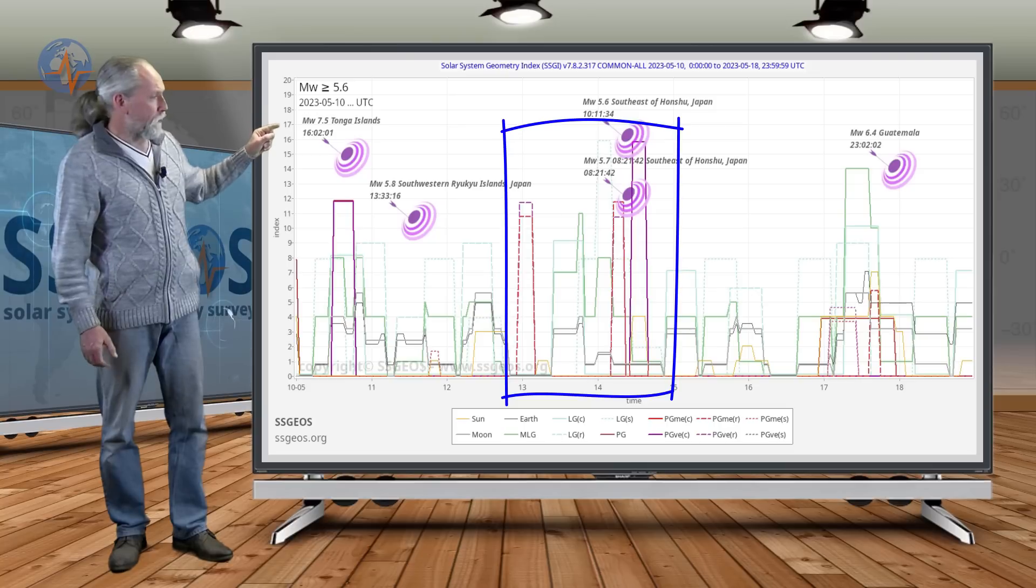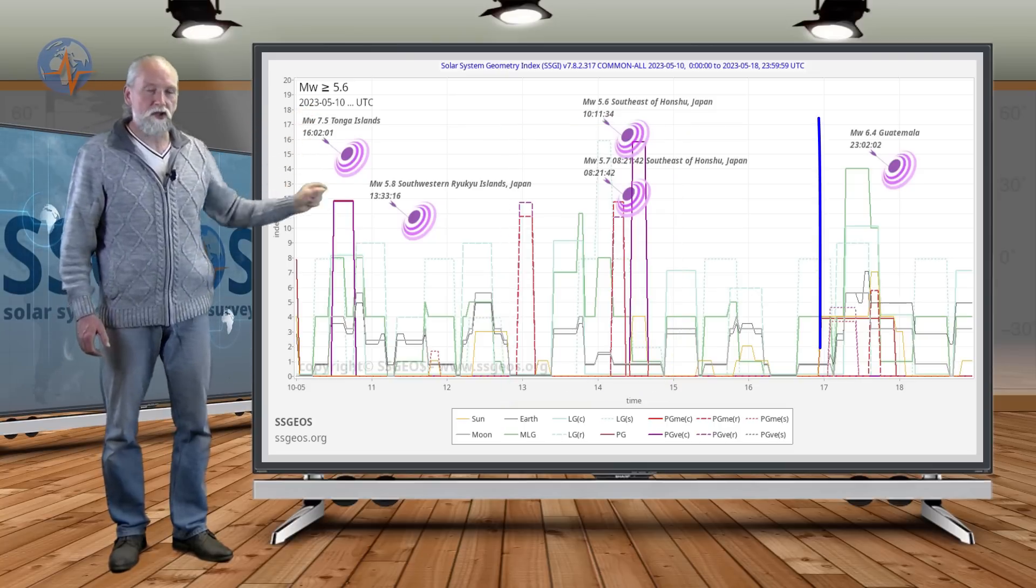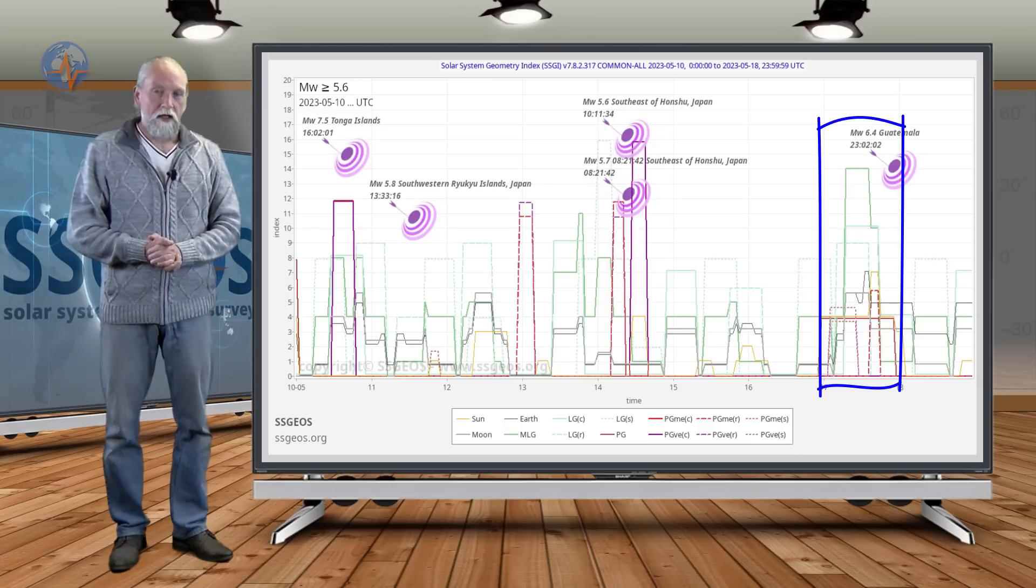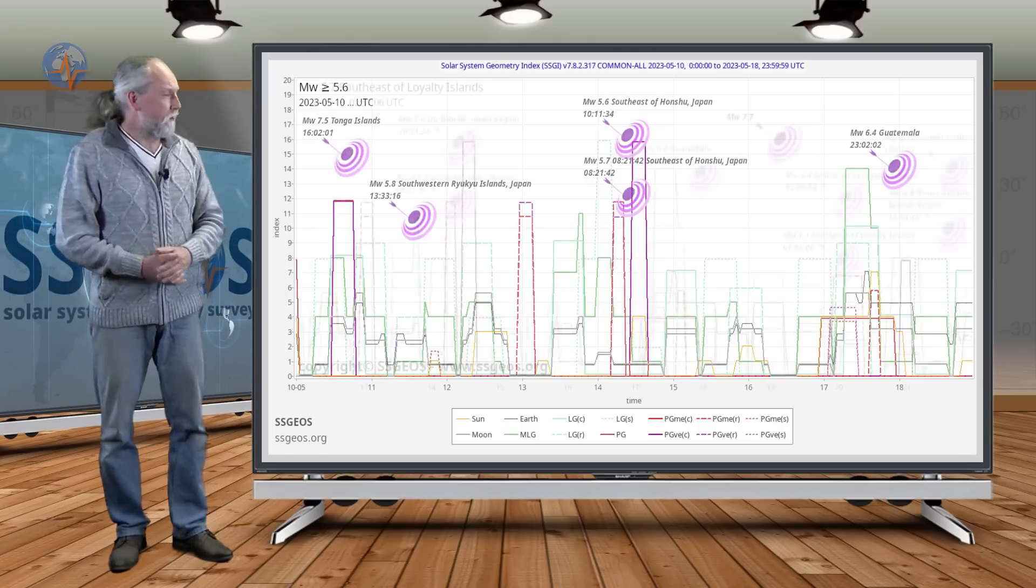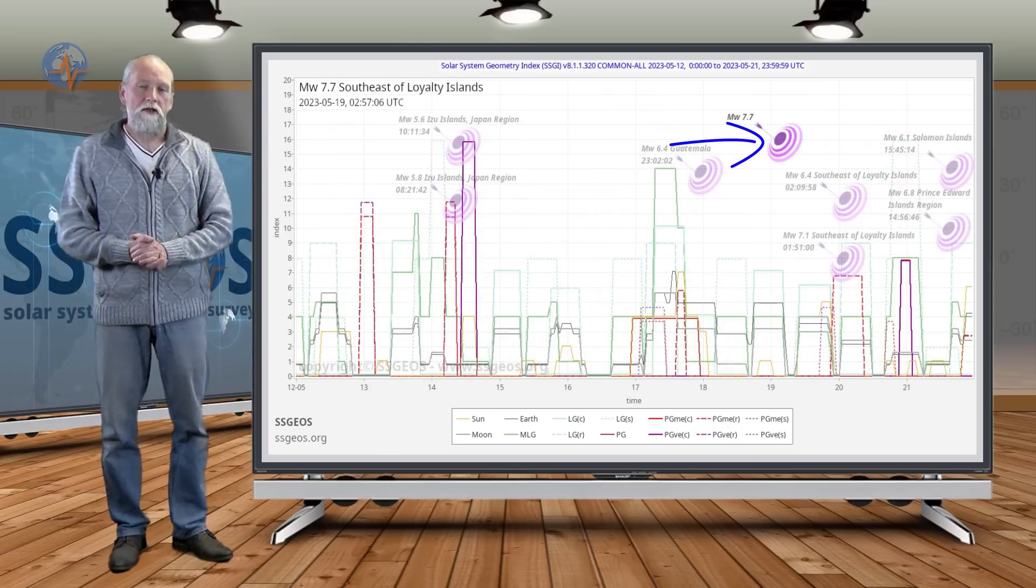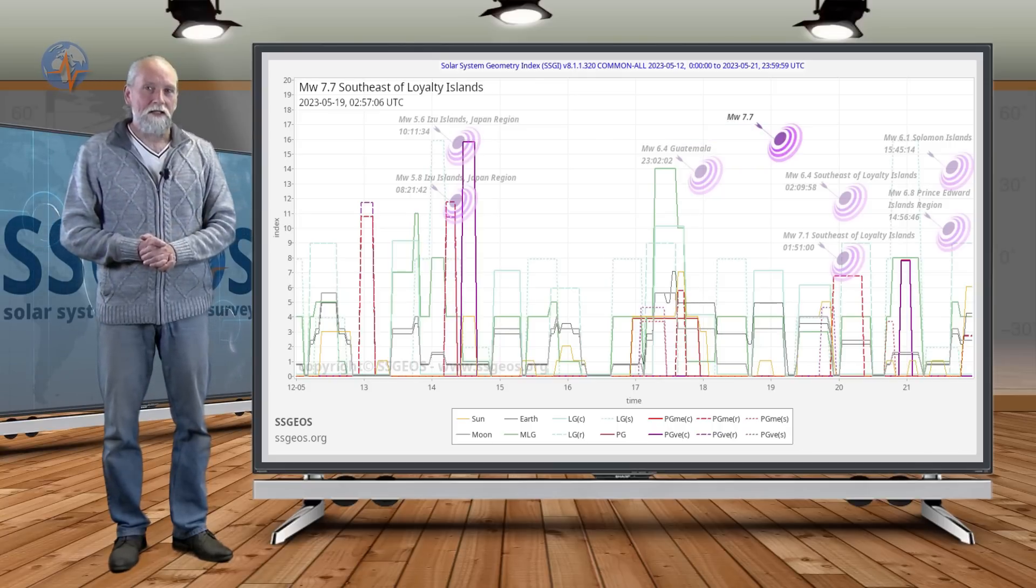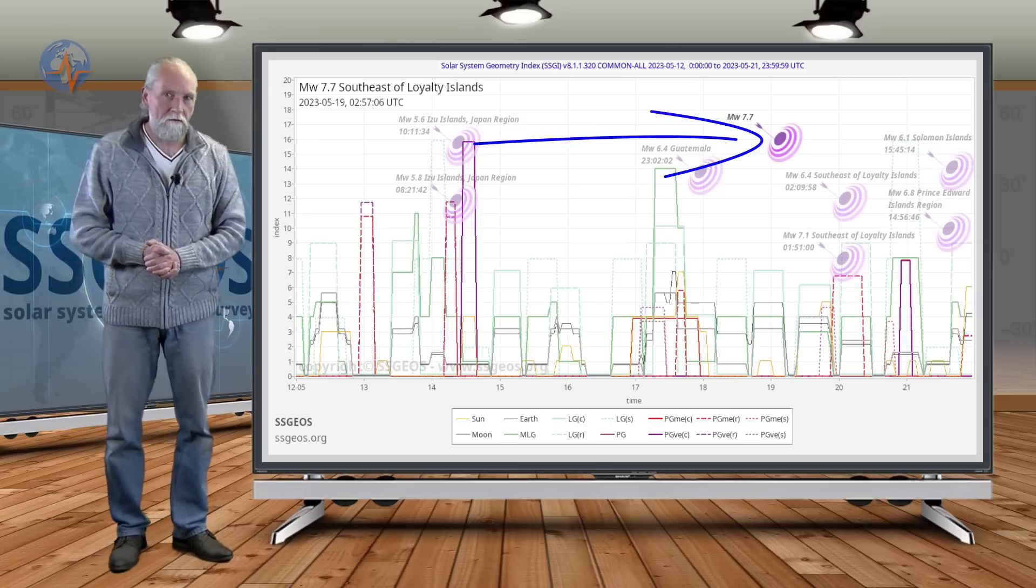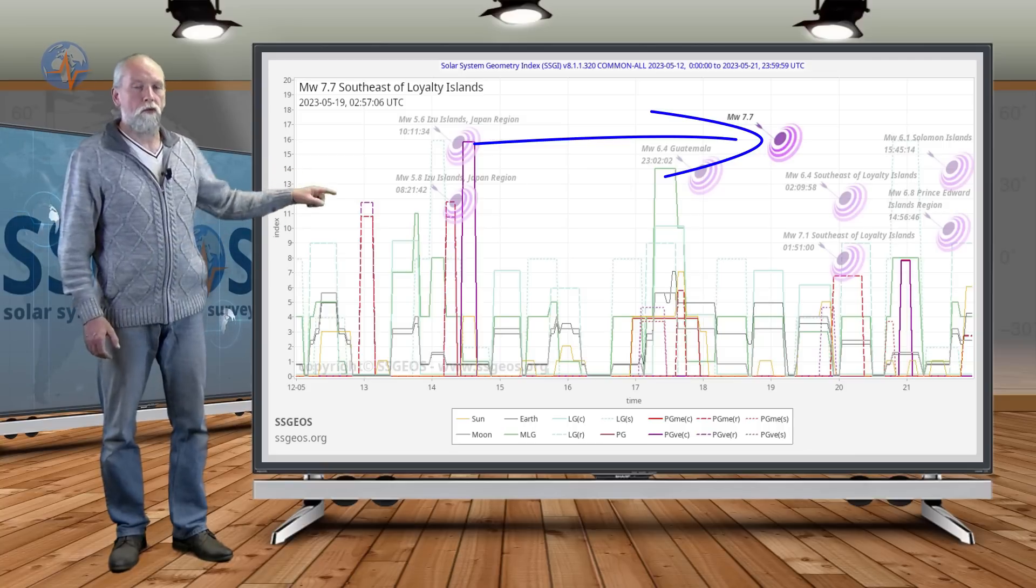We had earthquakes right there approaching magnitude 6 and then we had this magical lunar peak on the 17th that I also mentioned and it was followed by a 6.4 at Guatemala. Then this magnitude 7.7 happened two days after that lunar peak. Now the two days following that lunar peak is not a surprise and it happened within four and a half days of the planetary geometry convergence on the 13th, 14th.